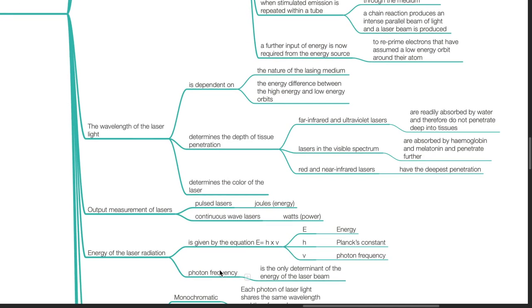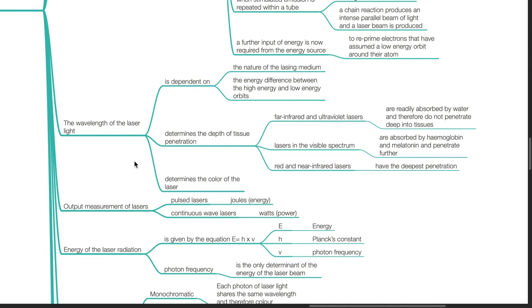The wavelength of a laser light is dependent on the nature of the lasing medium and the energy difference between the high energy and low energy orbits. The wavelength of the laser light determines the depth of tissue penetration. Far infrared and ultraviolet lasers are readily absorbed by water and therefore do not penetrate deep into tissues. Lasers in the visible spectrum are absorbed by hemoglobin and melanin and penetrate further. Red and near infrared lasers have the deepest penetration. The wavelength of laser light also determines the color of the laser.